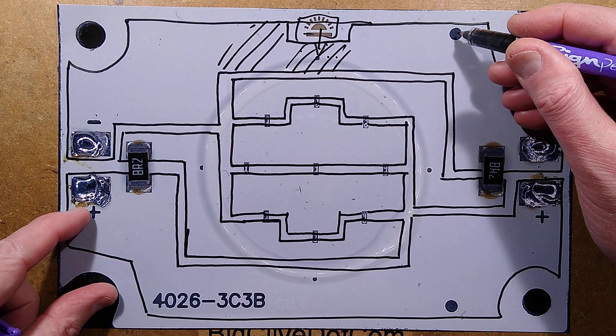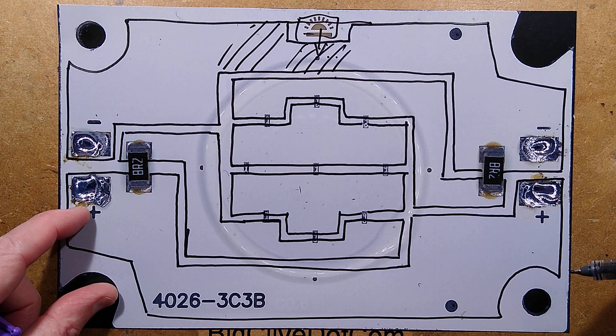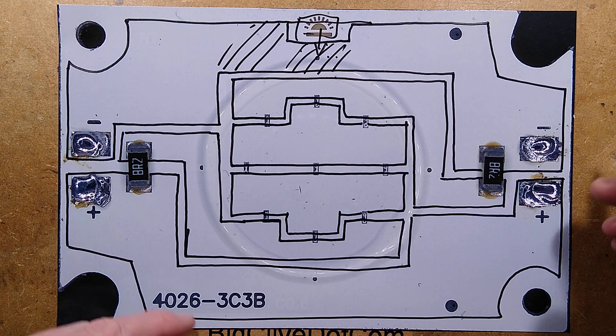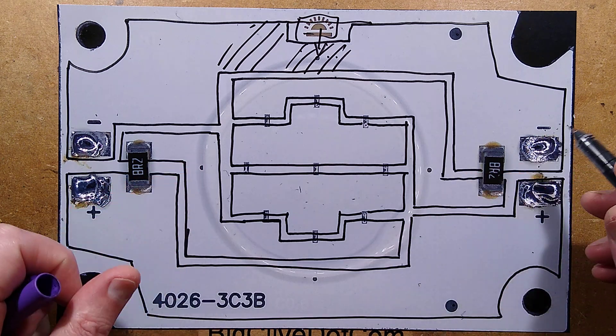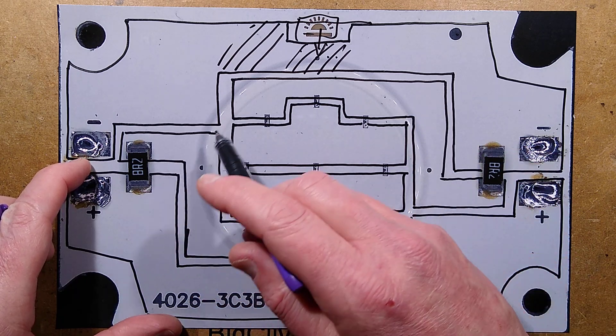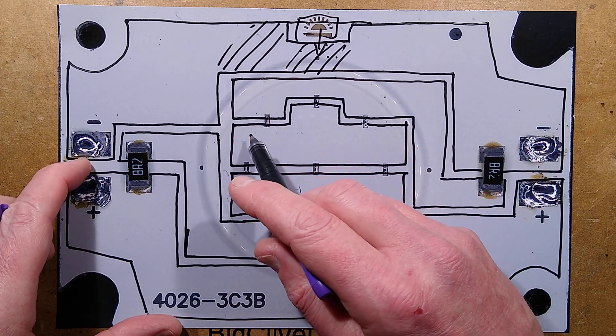I guess these two things are test points, maybe not, not really sure. Maybe for testing during manufacture. I see other little dots around here, but they've gone for the maximum amount of copper covering the area. There's very little copper left removed.